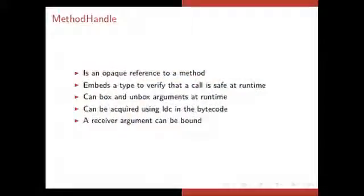The method handle is an opaque reference to a method. It embeds a type to verify that a call is safe at runtime. And it can box and unbox arguments at runtime, contrary to the standard autoboxing that we have that can only box at Java C compile time. It can also be acquired using the load constant in the bytecode, so it integrates well with the bytecode.